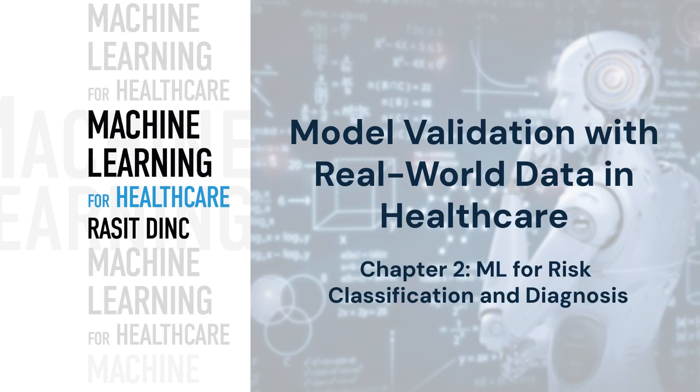Several processes are utilised for model validation with real-world data. The split and apply method involves dividing the data into training and test sets, training the model on one set while validating it on the other. Cross-validation enhances reliability by dividing the data set into multiple subsets for iterative testing.